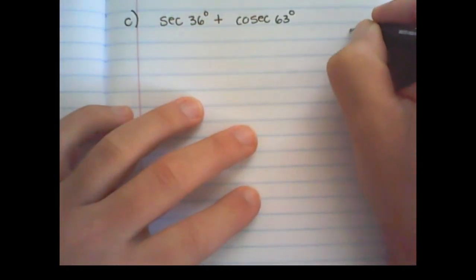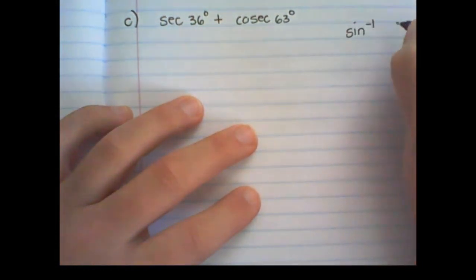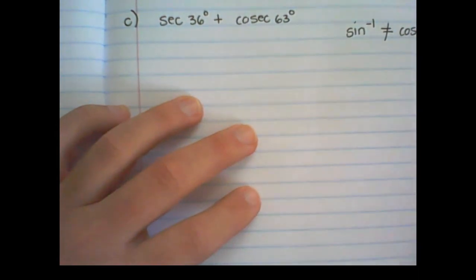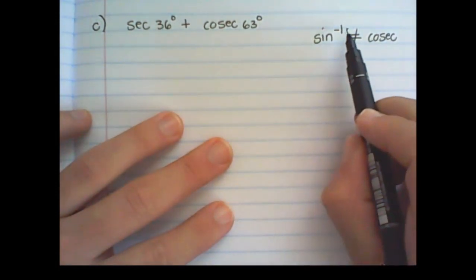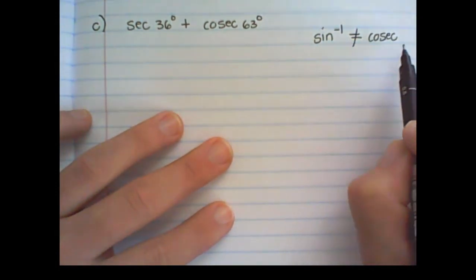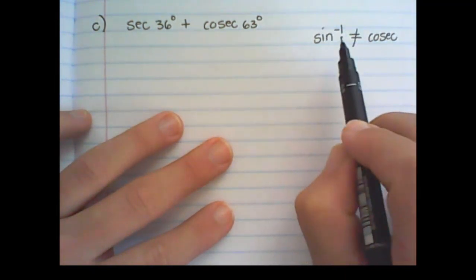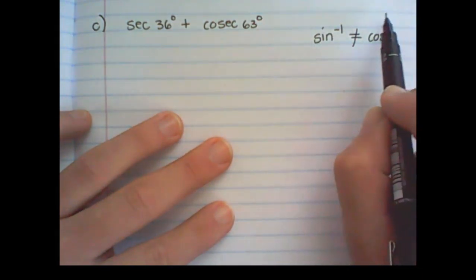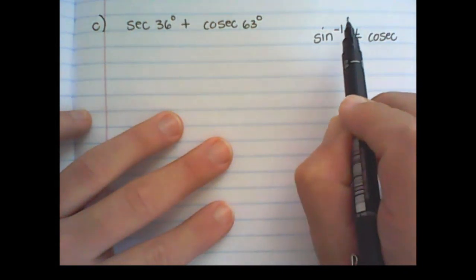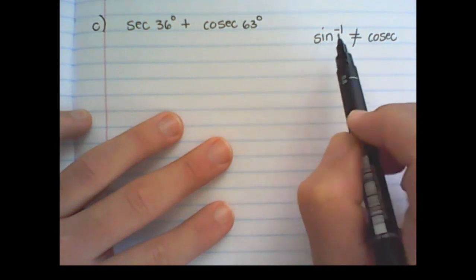And sine to the power of negative 1, or its reverse function in the calculator, is not equal to the cosec of sine. So the reverse function of sine on the calculator is not cosec of sine. So please be careful and don't assume that if you press shift sign that you are finding cosec. Remember shift sign when the calculator produces the reverse function is used to solve the angle.